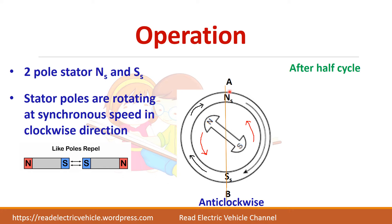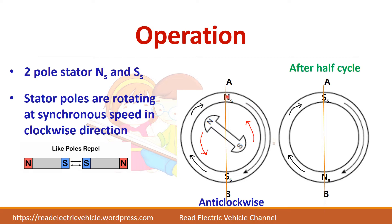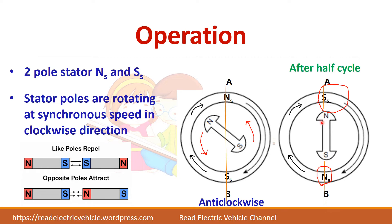After half a cycle, because we are giving AC supply to the stator, this point becomes south pole and this becomes north pole. Now look at the position of the rotor — this is south and this is north. The north pole in the rotor will be attracted towards the opposite polarity, so the north pole of the rotor and the south pole of the stator will try to align. Now the rotor is rotating in the clockwise direction.